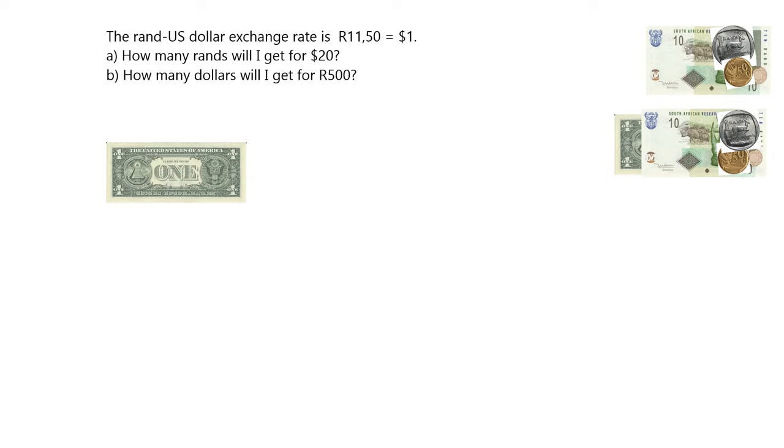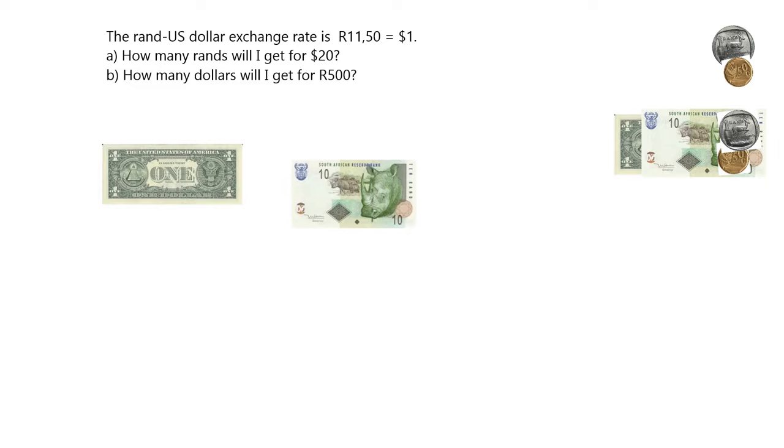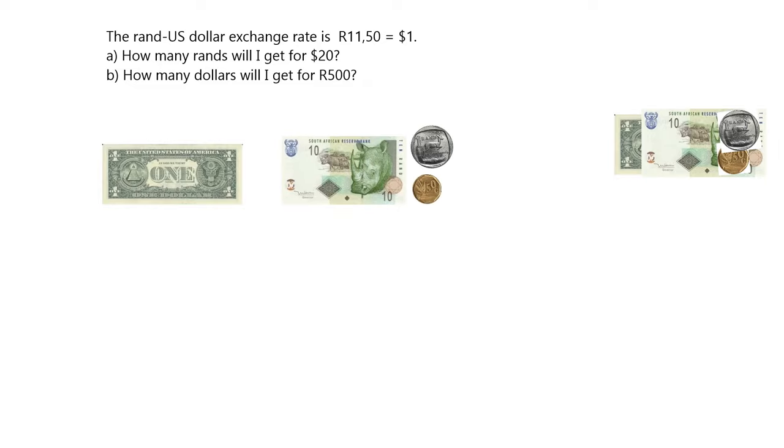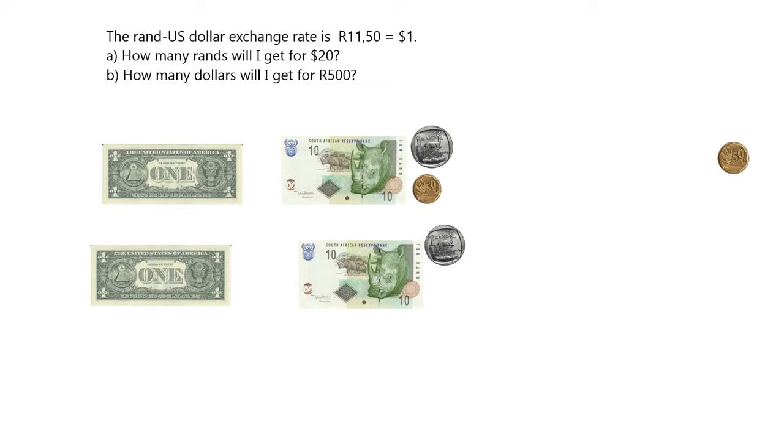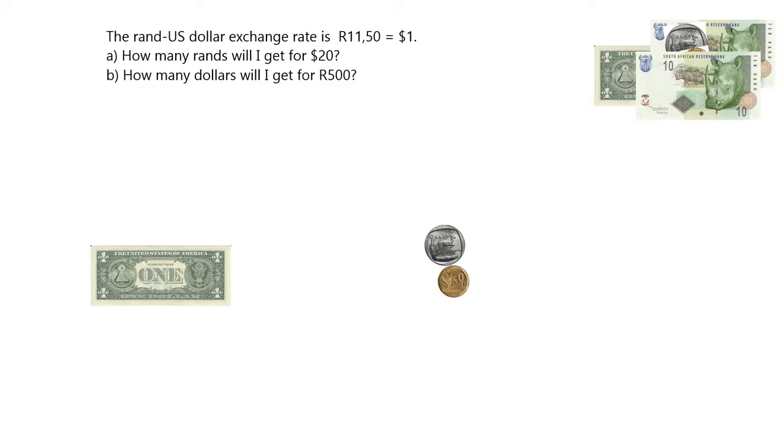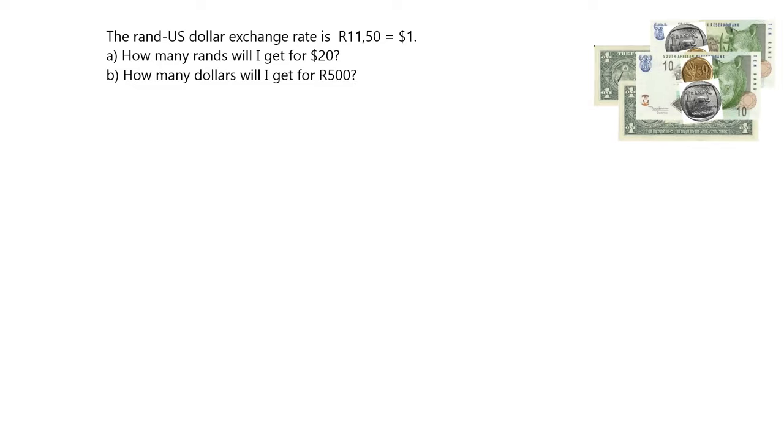For example, we could say the exchange rate between the rand and the US dollar is R11.50 is equal to $1. What that means is if you are going to go to America and you want to get some dollars, for each dollar you want to buy, you have to pay 11 rand 50. So if you wanted to buy $2, then you'd have to hand over two lots of 11 rand 50. If you want to buy $3, you'd have to hand over three lots of 11 rand 50. So you can see that these exchange rates work very similarly to everything we've been doing with ratio and rates up until now. So we can write this as 11 rand 50 to $1.